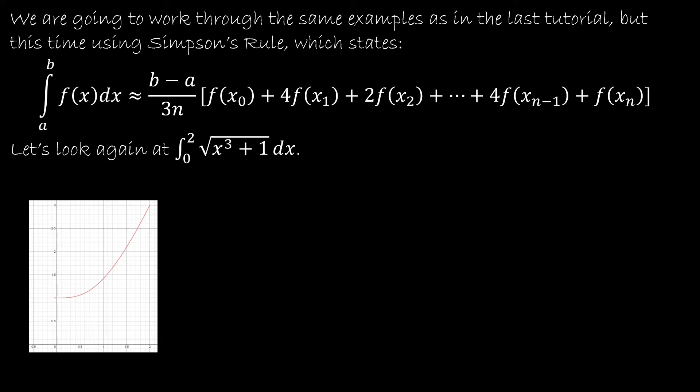The major differences here is instead of dividing by 2n, we have 3n. And in the trapezoidal rule, we had the pattern of 1, 2, 2, everything in the middle was 2s and then a 1. With Simpson's rule, I've got a pattern of 1, 4, 2, 4, 2, 4, 2.